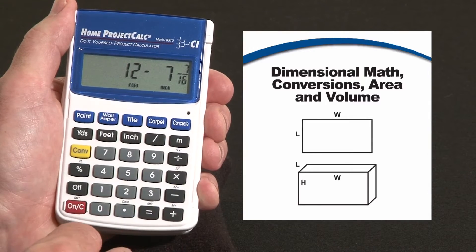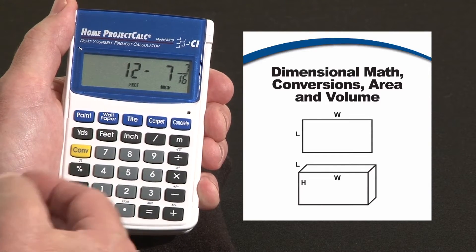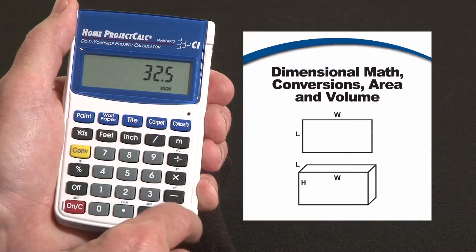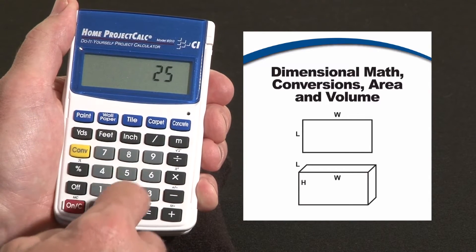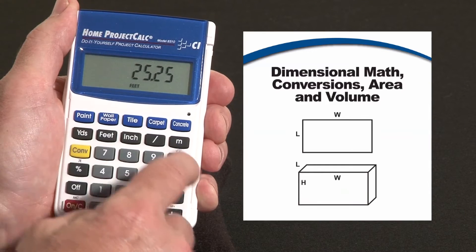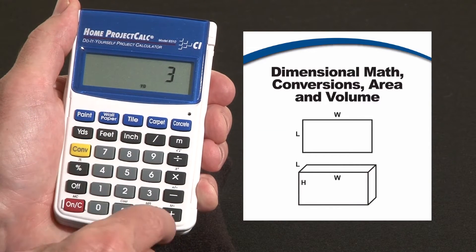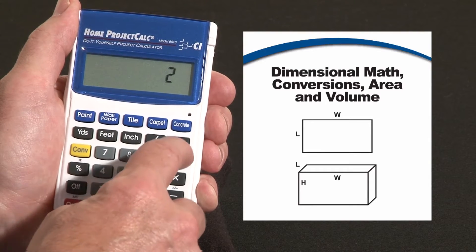But you're not locked into feet-inch fraction format. You can combine tenths and hundredths, let's say plus 32.5 inches, plus 25.25 feet, minus three yards, plus two meters.